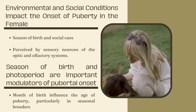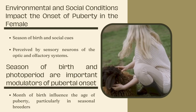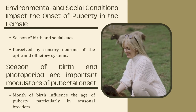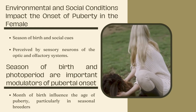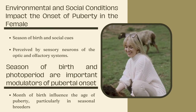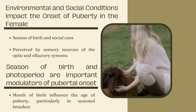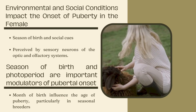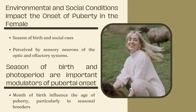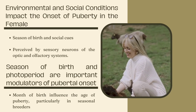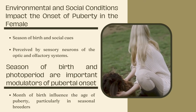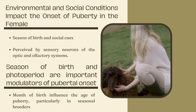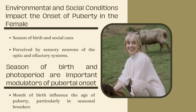Environmental and social conditions: there are external factors that have an important influence on the onset of puberty. These factors include the season of birth and social cues such as the presence of males or the size of the social group in which females are housed. In general, sensory neurons of the optic and olfactory systems perceive environmental information that influences pubertal onset. Season of birth and photoperiod are essential modulators of pubertal onset. The month of birth influences the age of puberty, particularly in seasonal breeders, provided no artificial illumination alters natural photoperiod cues.